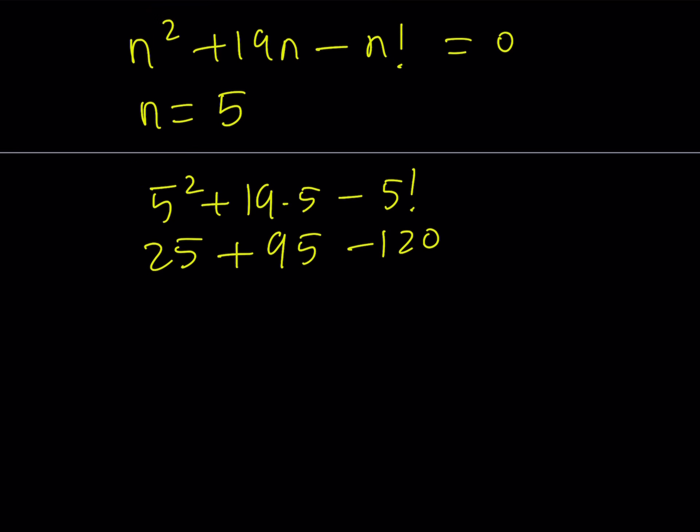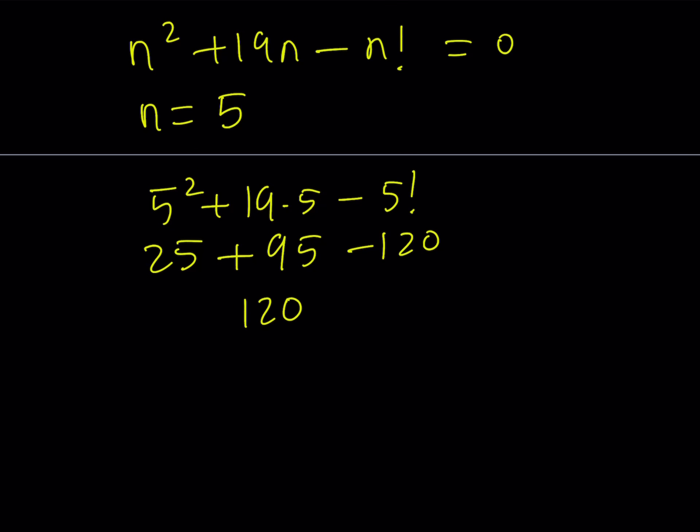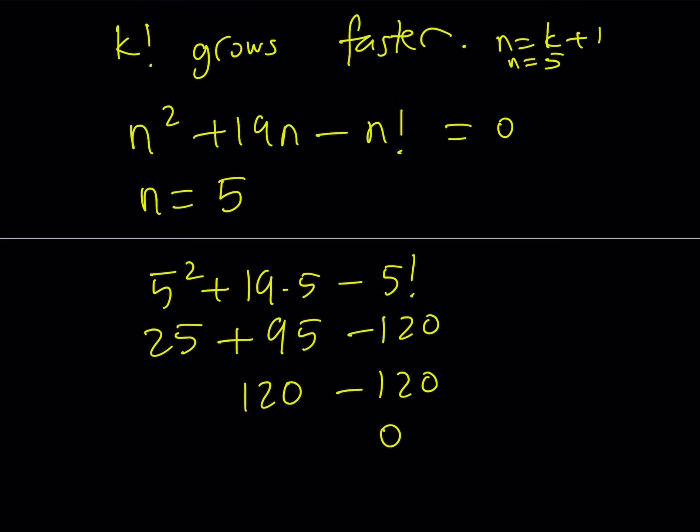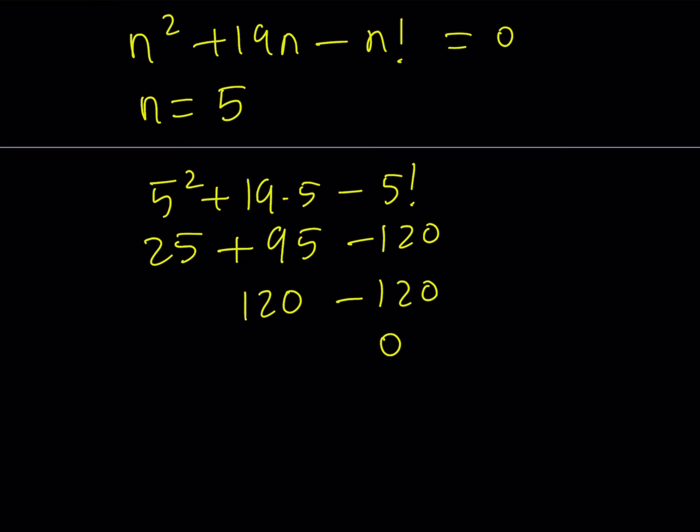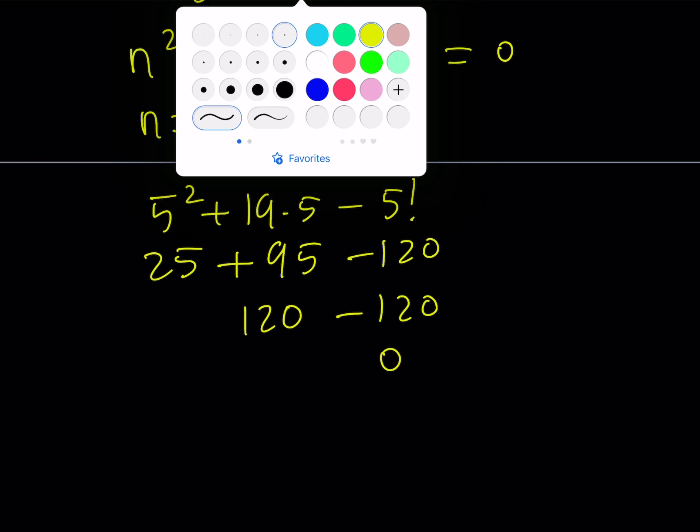5 factorial is 120. 25 plus 95 is 120 minus 120 equals 0. So our solution checks out. n equals 5 happens to be the only solution to this equation.